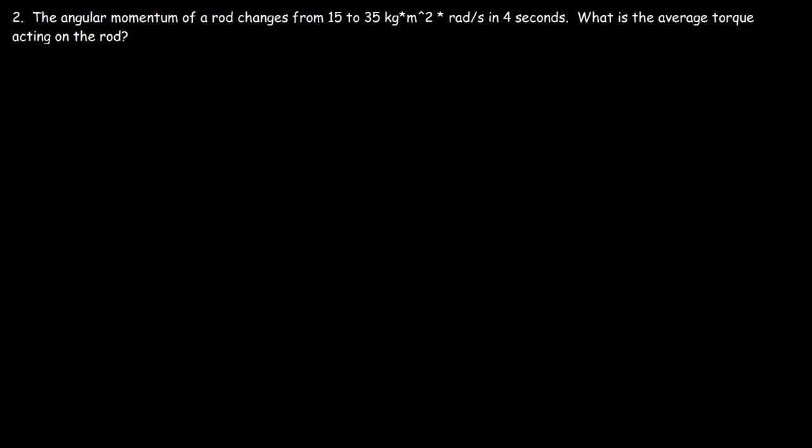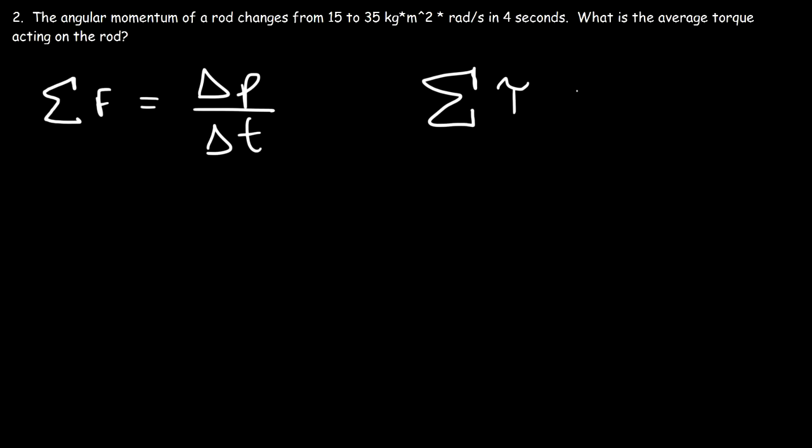Now let's move on to our second question. The angular momentum of a rod changes from 15 to 35 kilograms times meters squared times radians per second in 4 seconds. So what is the average torque on the rod? Linear momentum is mass in motion — anything that's moving has momentum. Angular momentum is very similar, but for objects that are spinning. To calculate the net torque, it's equal to the change in angular momentum divided by the change in time.